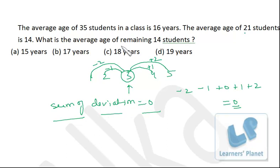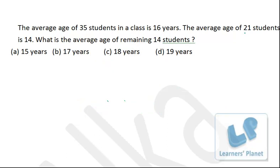Now how we are going to use this concept to solve this sort of problems? Just listen to me carefully. Now let's solve this problem using this deviation concept. The average age of 35 students in a class is 16 years. So mean, that is mean value or we can say average is 16. The average age of 21 students is 14.